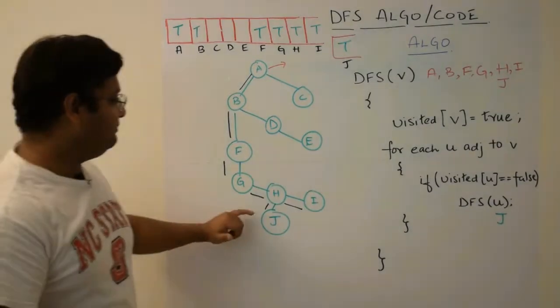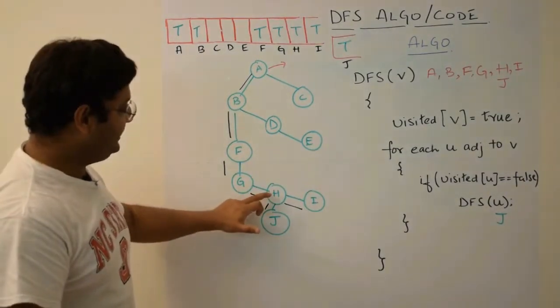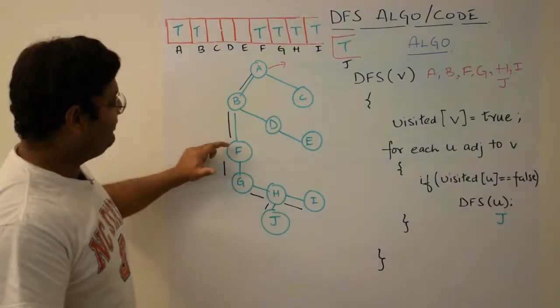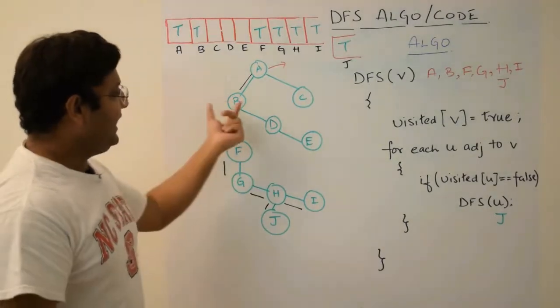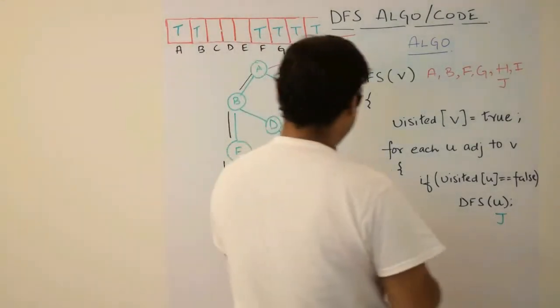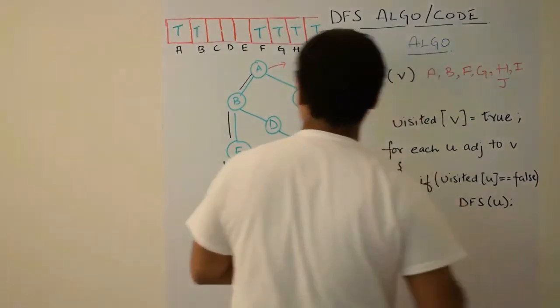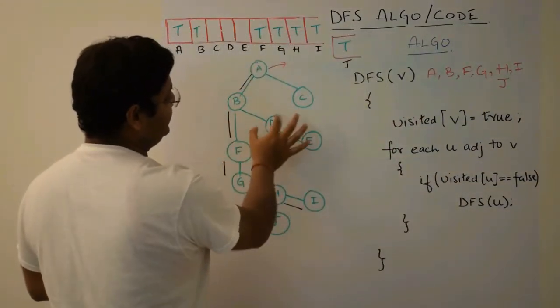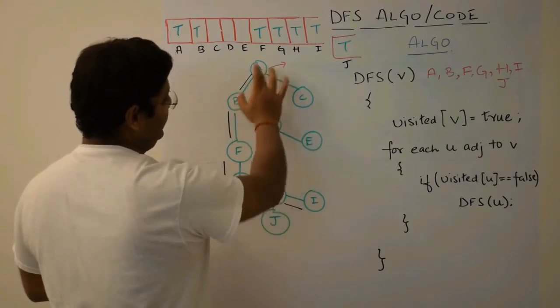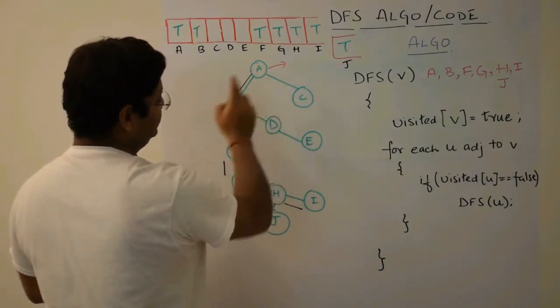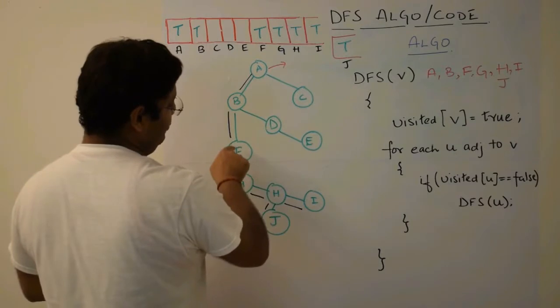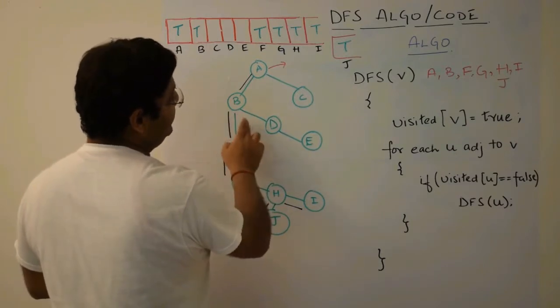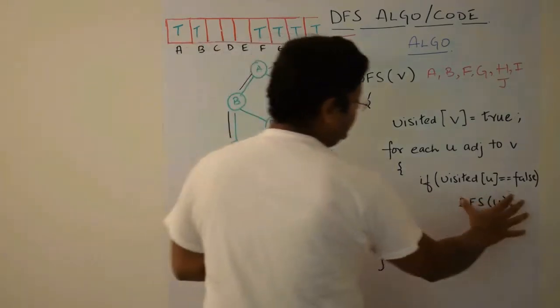Now what will happen? Now you will start backtracking. From H, H to G, G to F, F to B. And now what will happen? Here when we had B, you remember we had passed F. Now it is turn of D because we had at that time two neighbours, three neighbours in fact, A, F and D. A was already visited. We chose to go through F. Now D is remaining. So here D will be now. We will pass D onto this DFS function. So D will get passed.